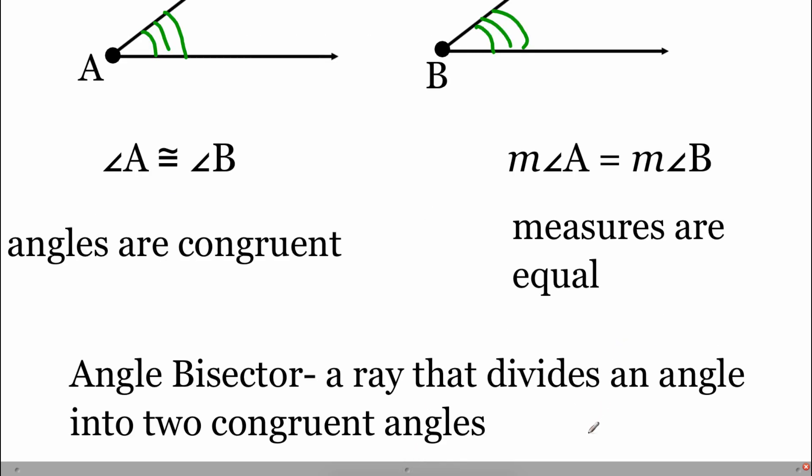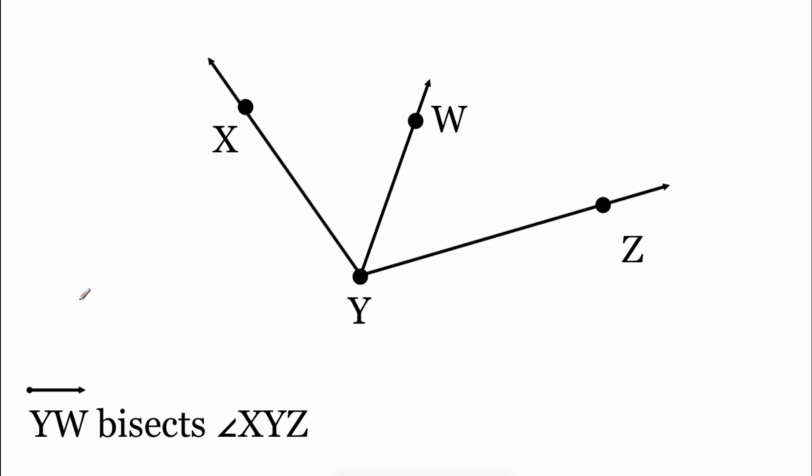One way we can get congruent angles is something called an angle bisector. And an angle bisector is a ray that takes an angle and splits it into two smaller congruent angles. So if we take a look at this picture, we're told that the ray YW bisects the big angle XYZ. So this YW ray is splitting this big angle into two congruent pieces. So I'm going to put one arc on this left angle and one arc on this right angle. So now we could say that angle XYW is congruent to angle WYZ. Or if we were talking about their measures, we would say the measure of angle XYW is equal to the measure of angle WYZ.